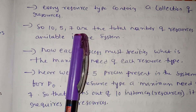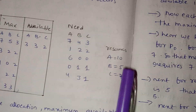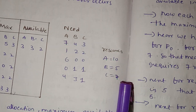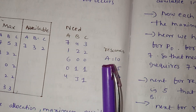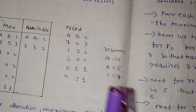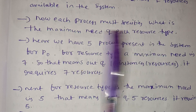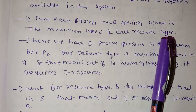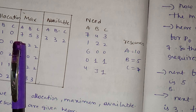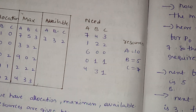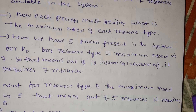So we have 10, 5, and 7 — the total number of resources available in the system: 10 printers, 5 scanners, and 7 RAMs connected to the computer. Now each process must specify what is the maximum need of each resource type.